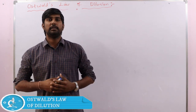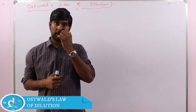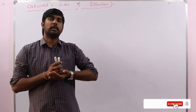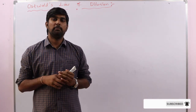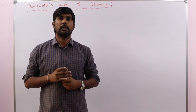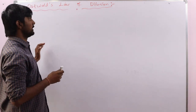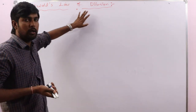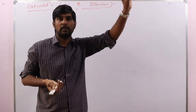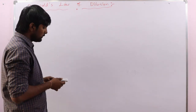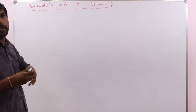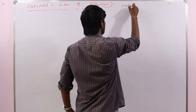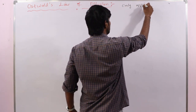In the previous lecture we discussed factors affecting degree of dissociation or ionization, and we discussed that alpha is inversely proportional to concentration. Now in this lecture let us discuss the derivation for that — this is explained by Ostwald's Law of Dilution. Ostwald's Law of Dilution is only applicable for weak electrolytes.